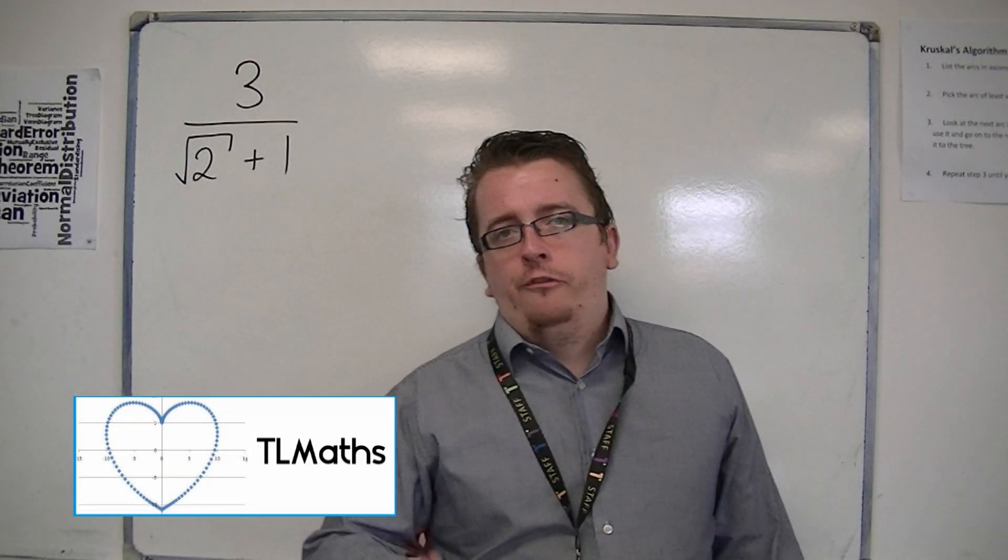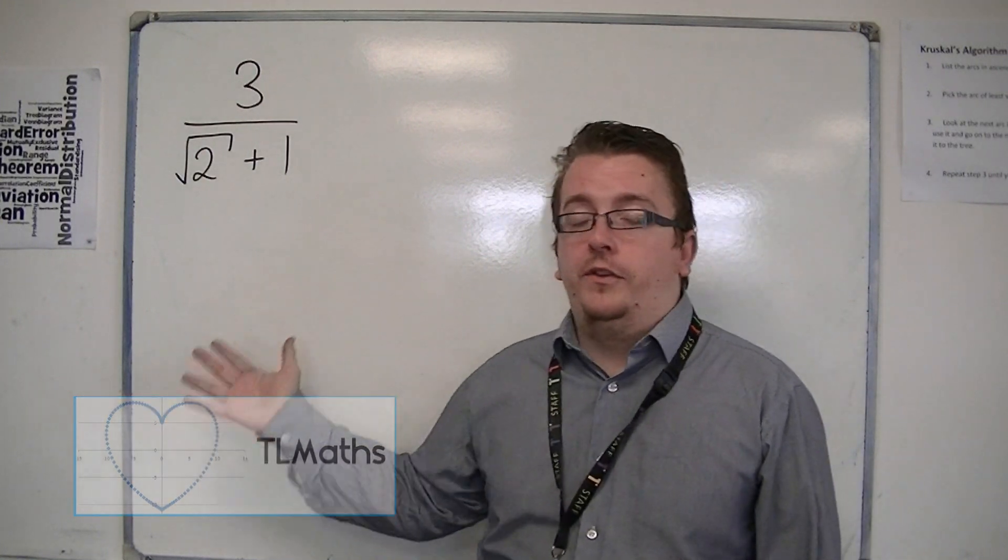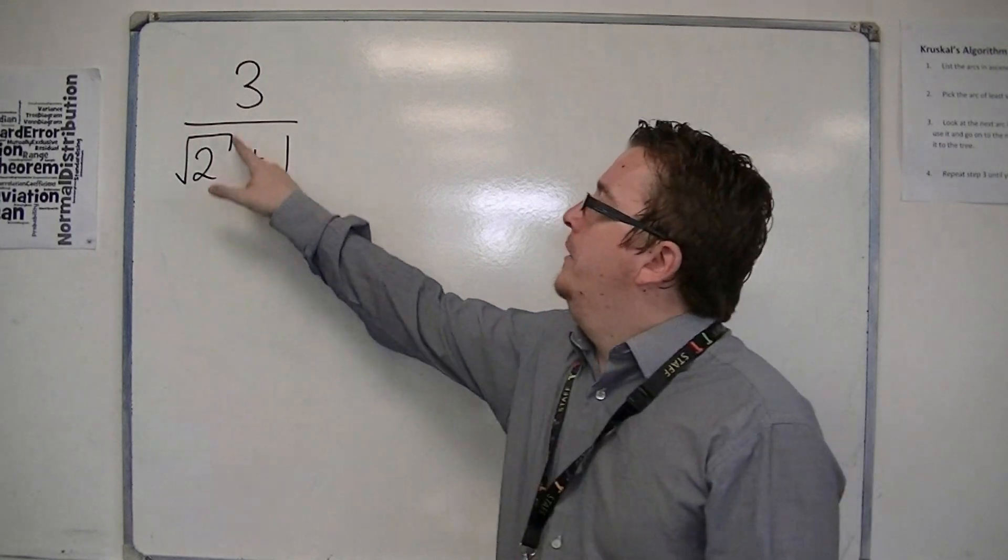Things become a little bit more fiddly when you're trying to rationalize the denominator for something that looks like this. We still have an irrational number in the denominator, this root 2.